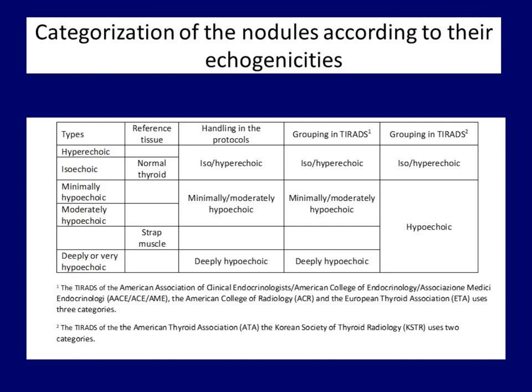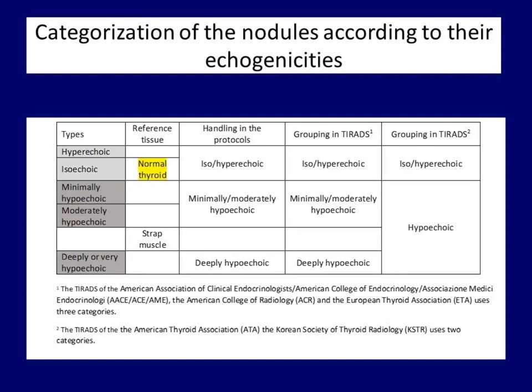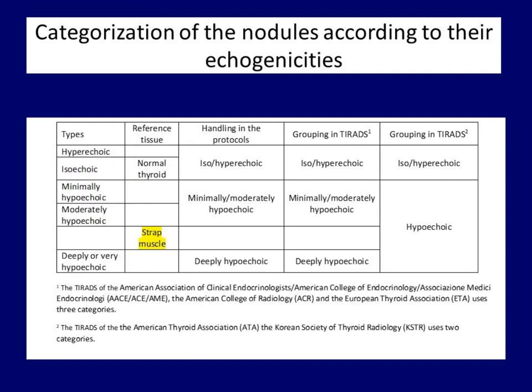We have two reference tissues. The more important is the normal thyroid. If a nodule is more or similarly echogenic to the normal thyroid, then it belongs to the iso-hyperechoic subgroup. If the nodule is darker than the normal thyroid, the nodule is hypoechoic. The other distinction is based on comparison to the strap muscle in the event of hypoechoic nodules. If a hypoechoic nodule is less dark than the strap muscle, then it should be considered as minimally or moderately hypoechoic. If the lesion is darker than the strap muscle, the nodule is deeply or very hypoechoic.